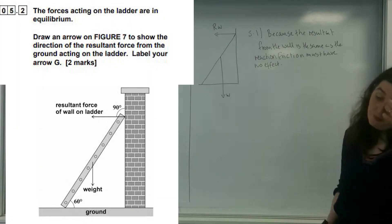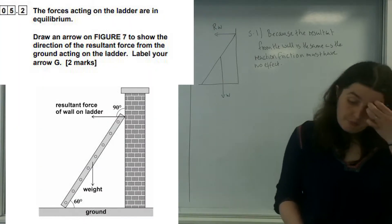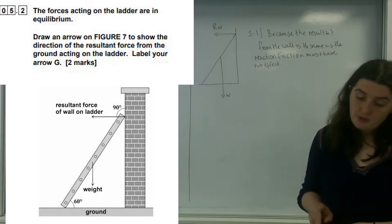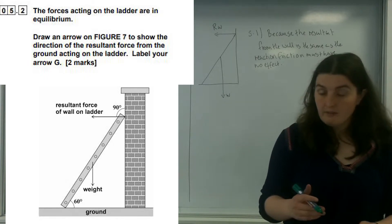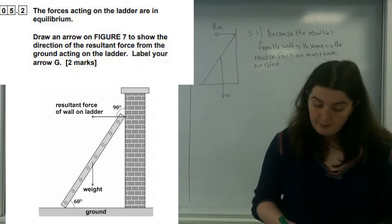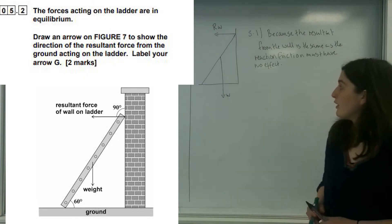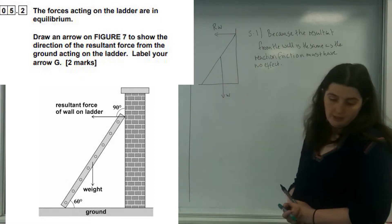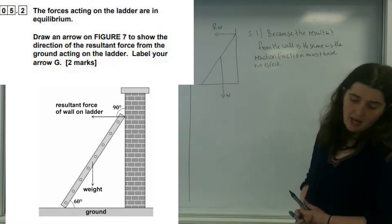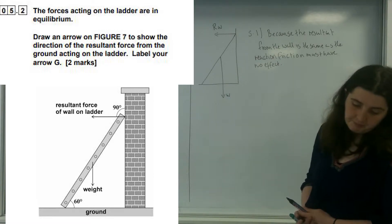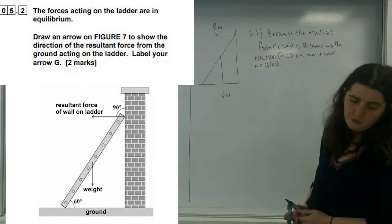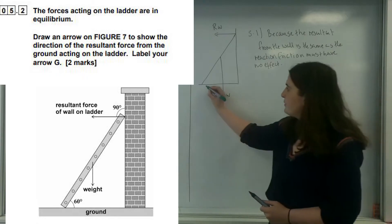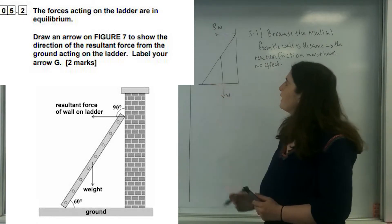Which leads me on to 5.2. It's telling me that the forces on the ladder are in equilibrium. Draw an arrow on figure 7 of the resultant force from the ground on the ladder — so from this point here.